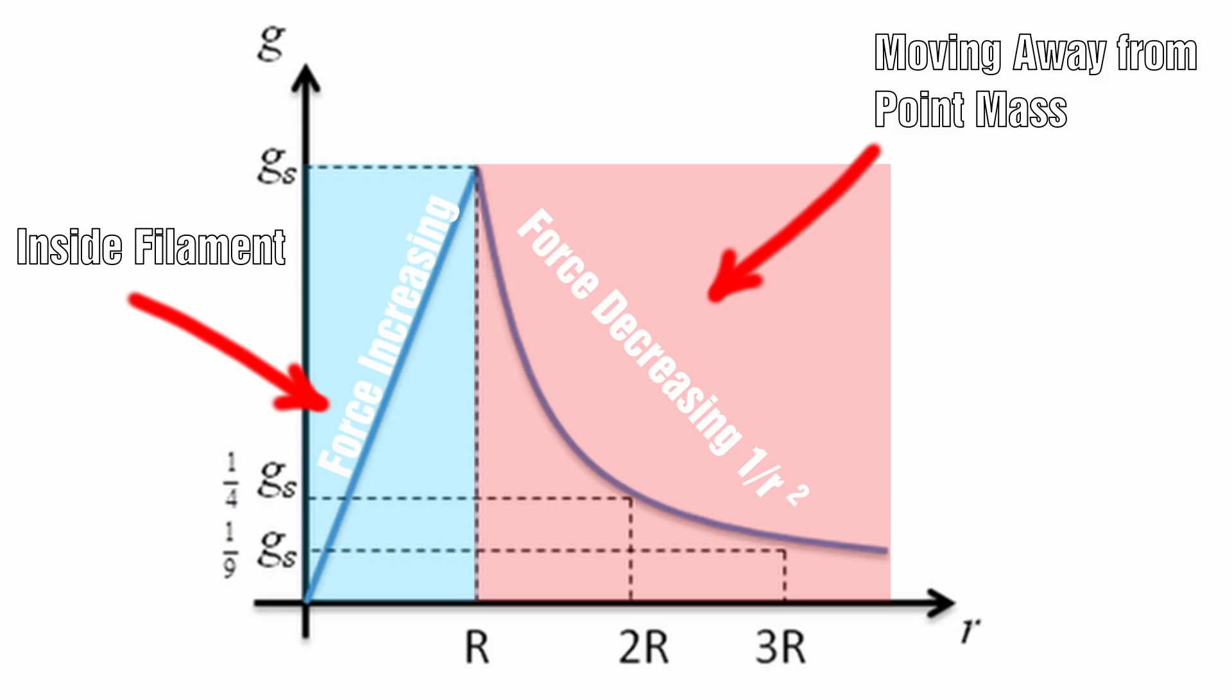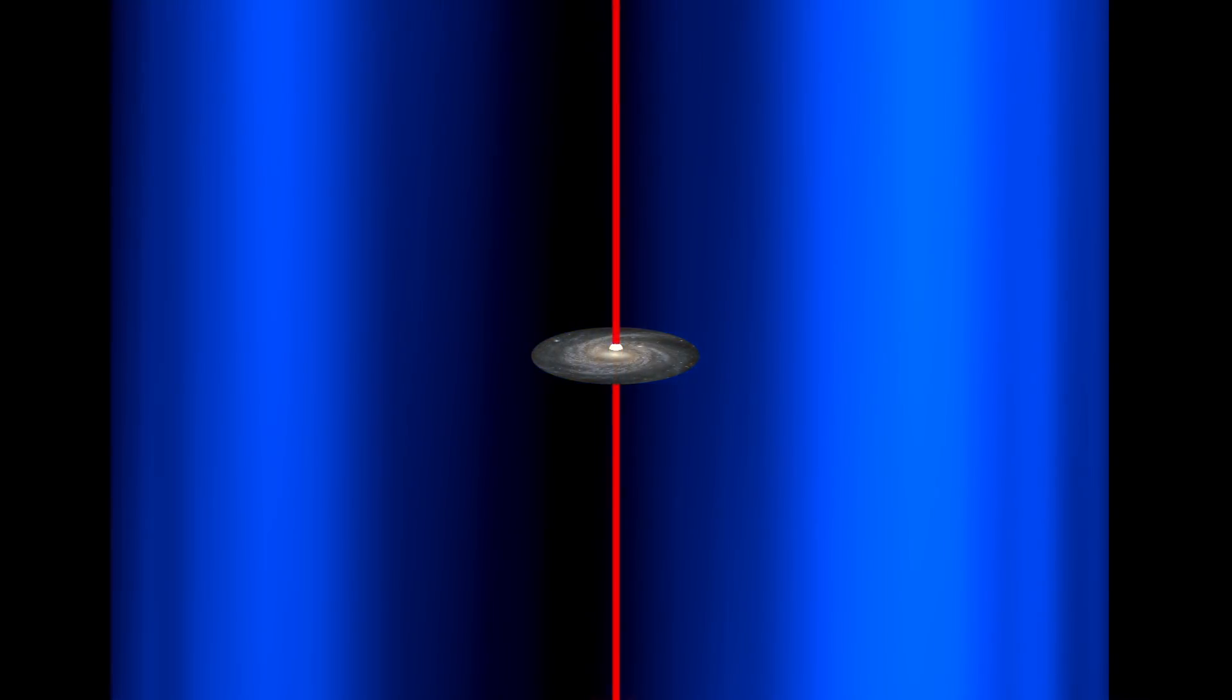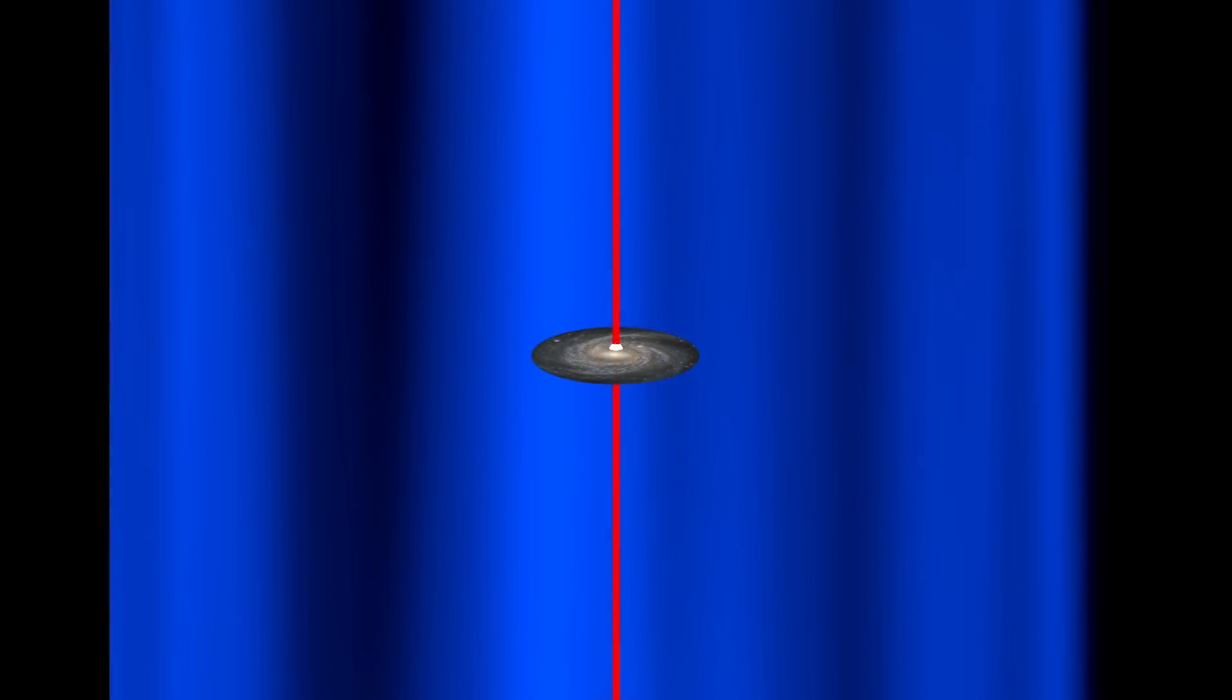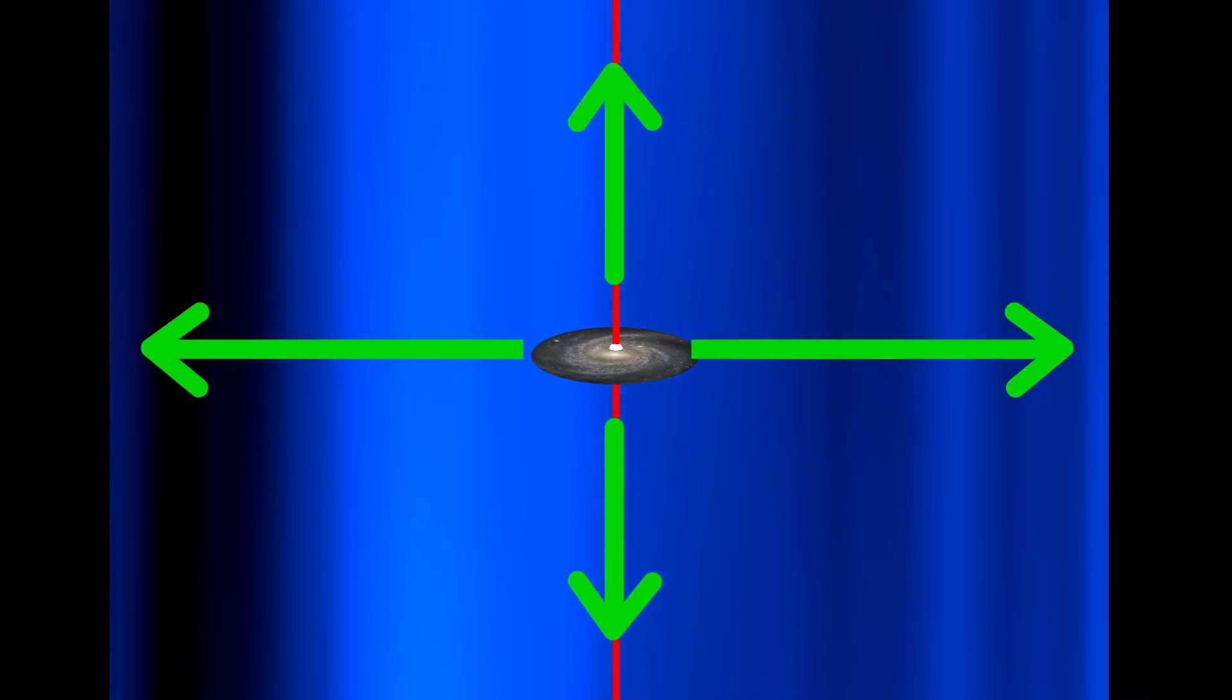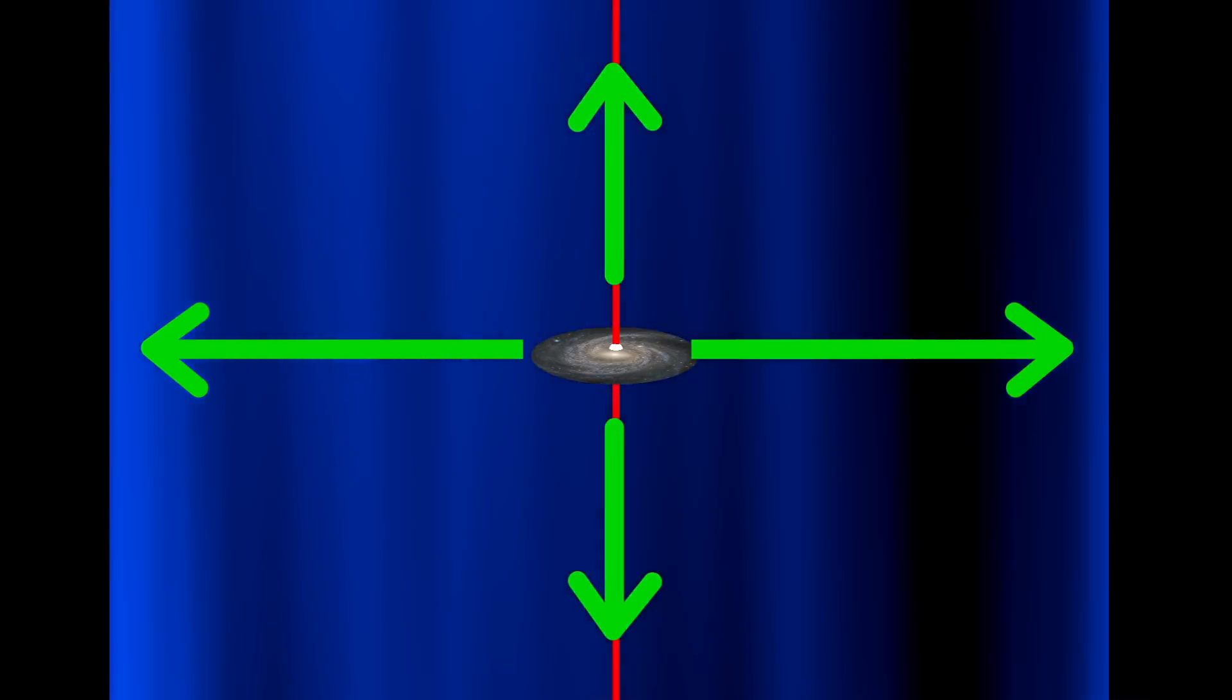This is the opposite to what you would expect if you are moving away from a body where the field falls off with an inverse square law. Assuming the galaxies form close to the center of the filament the highest concentration of matter would be at the center. The mass from the filament would also cancel out from each direction leaving an inverse square law.